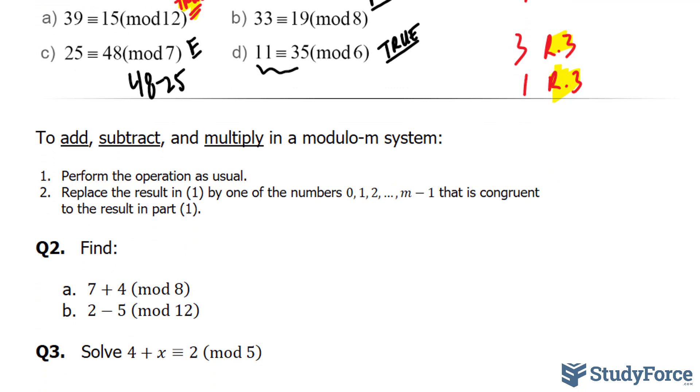This time we will learn how to add, subtract, and multiply in the modulo m system. The steps are shown on your screen. We first have to perform the operation as usual, and then replace the result by one of the numbers between 0 and m minus 1 that is congruent to the result in part 1.